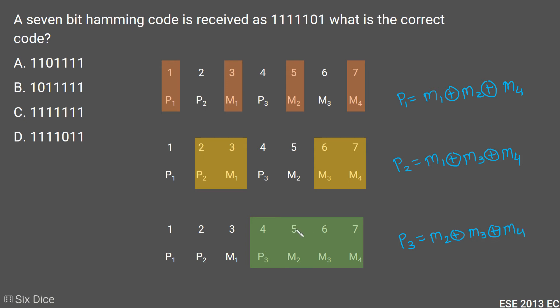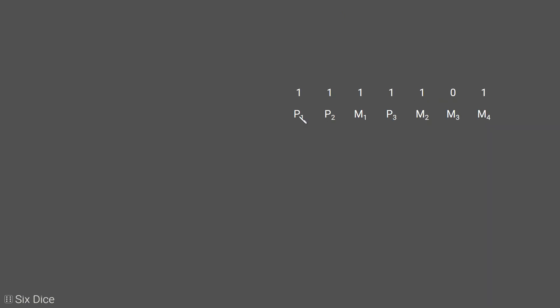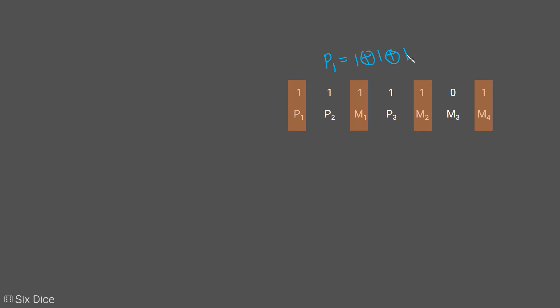We will put our values into all these positions and check which parity bit gives an error. Looking at the given Hamming code, parity bit 1 is given as 1. Checking parity bit 1: 1 XOR 1 XOR 1 gives 0, and 0 XOR 1 gives 1. So parity bit 1 is satisfied — no error indicated here.